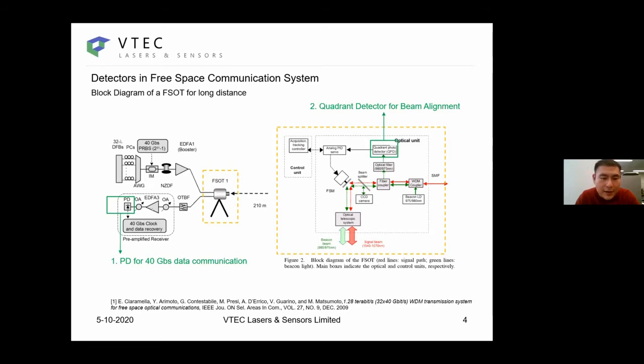When the beam has been aligned via the control loop that controls the fast scanning mirror, the communication can start. On the left hand side, on the receiver side, there is also a high speed photo detector for 40 gigabit per second data communication. This communication has been established at 210 meters distance. We can see there are separate detectors for data communication and detectors for beam alignment in the long distance communication terminals.